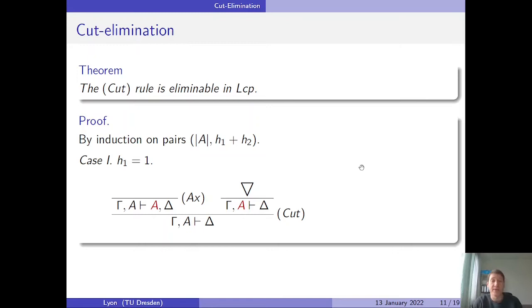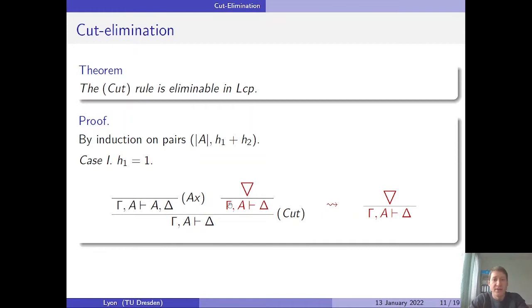In the first case, assume h1 = 1, meaning the left premise of cut has derivation height 1, so it is an instance of the axiom rule with A as the principal formula. In this case the conclusion of cut is identical to its right premise. So we eliminate cut by simply taking the derivation that gives rise to the right premise of cut — cut no longer appears.